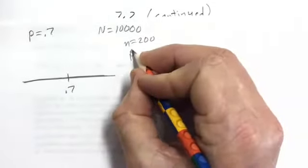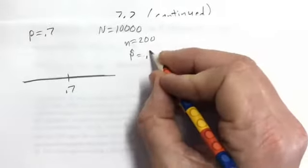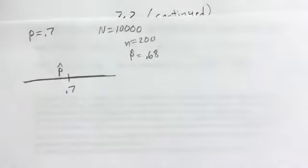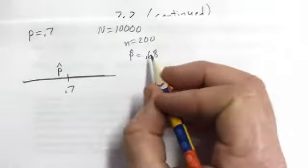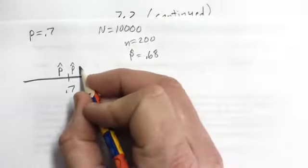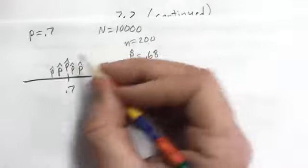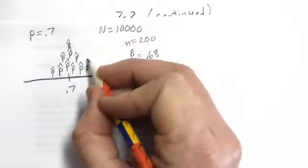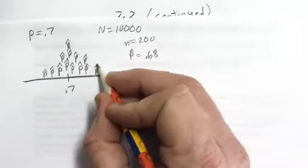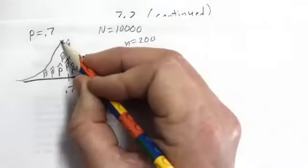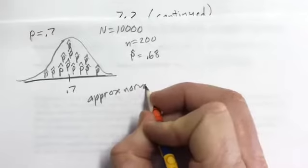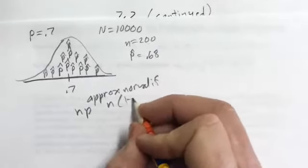What is a sampling distribution? A sampling distribution is every value the sample proportion P-hat could take. Suppose in our first sample we got 0.68. If we took many samples of size 200, we would get another P-hat each time. They would all vary just because of random chance — what we call sampling variability. All the possible values of P-hat form what we call a sampling distribution.